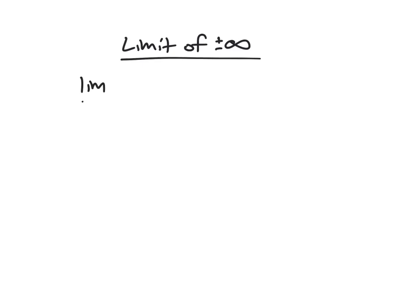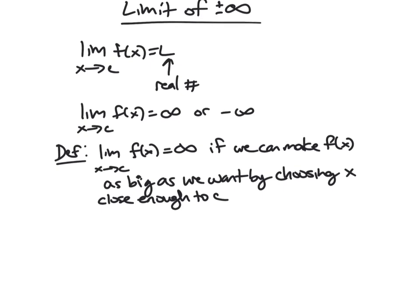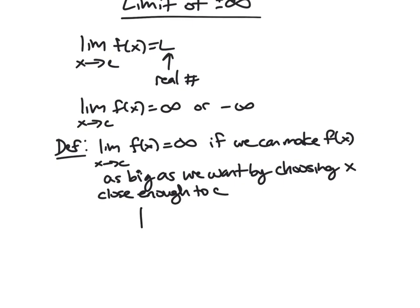Thus far, we've seen things like limit as x approaches c of f(x) equals L, where this is some real number. But now we want to consider what it would mean to have the limit as x approaches c of f(x) equal infinity or minus infinity. So we say that the limit as x approaches c of f(x) is infinity if we can make f(x) as big as we want by choosing x close enough to c.